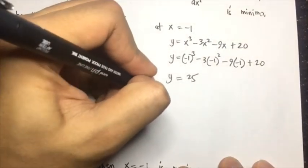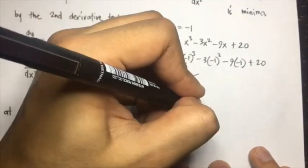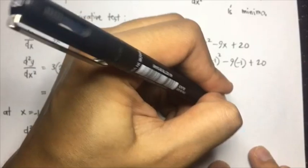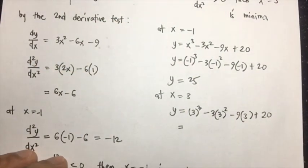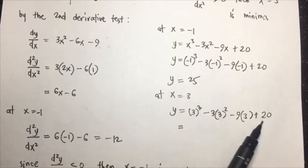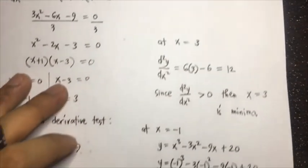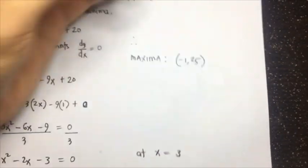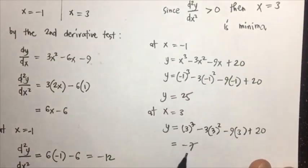At x = 3: y = 3³ - 3(3²) - 9(3) + 20 = 27 - 27 - 27 + 20 = -7. Therefore, the points are: for maxima, the point is (-1, 25); for minima, the point is (3, -7).